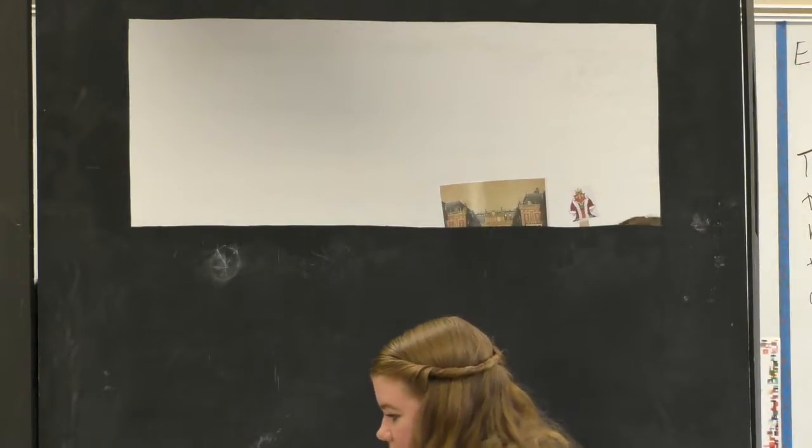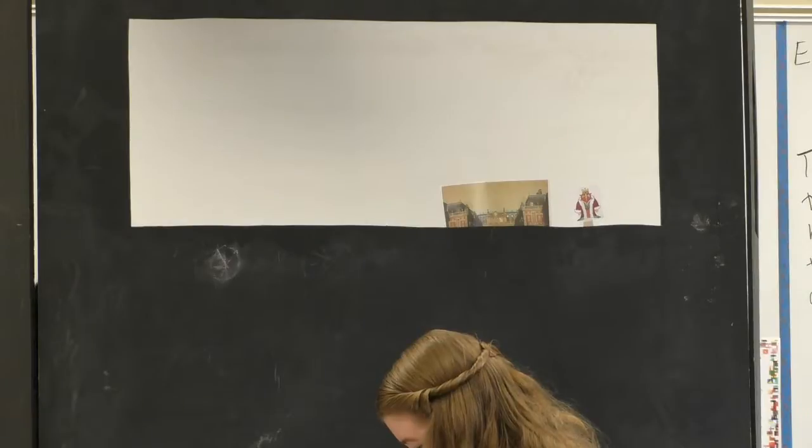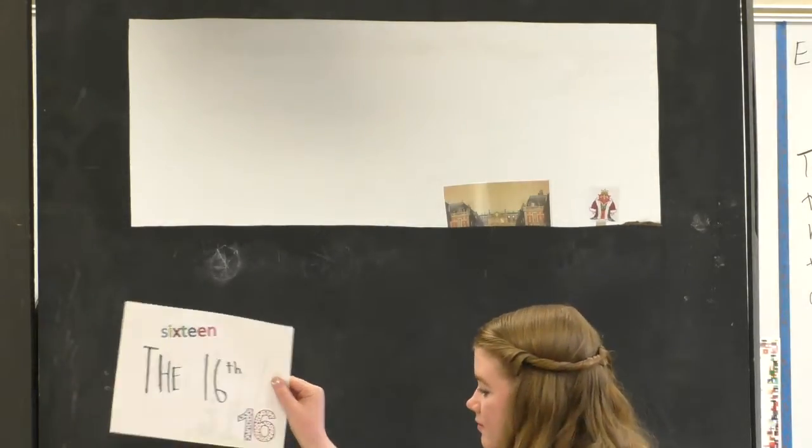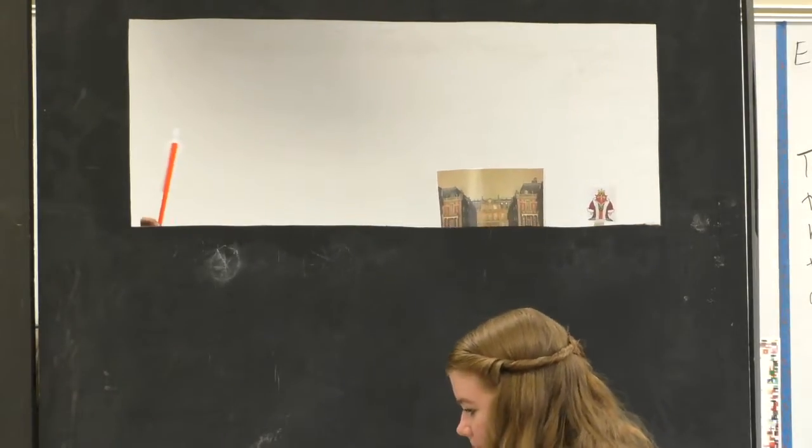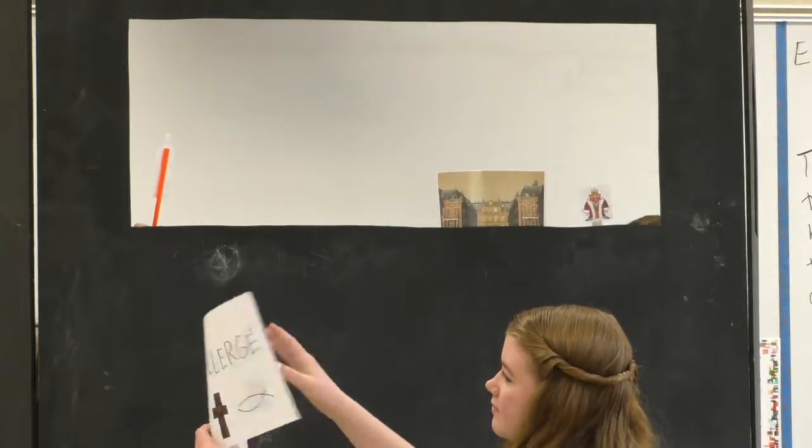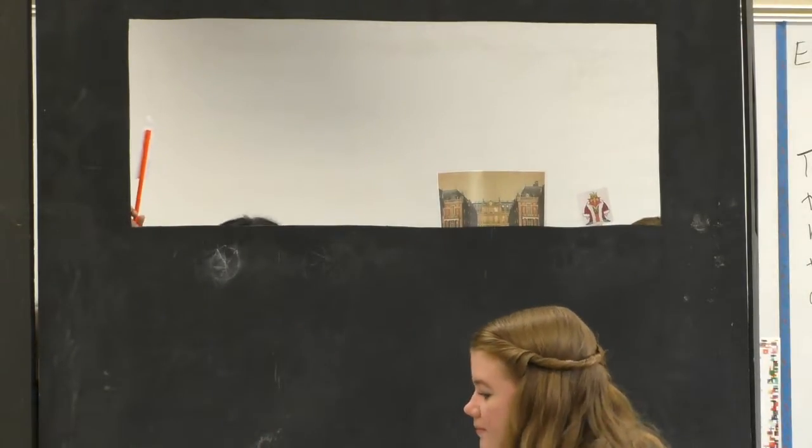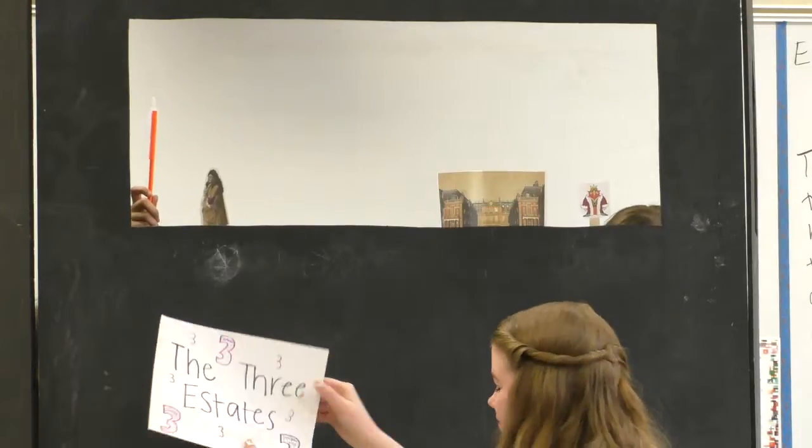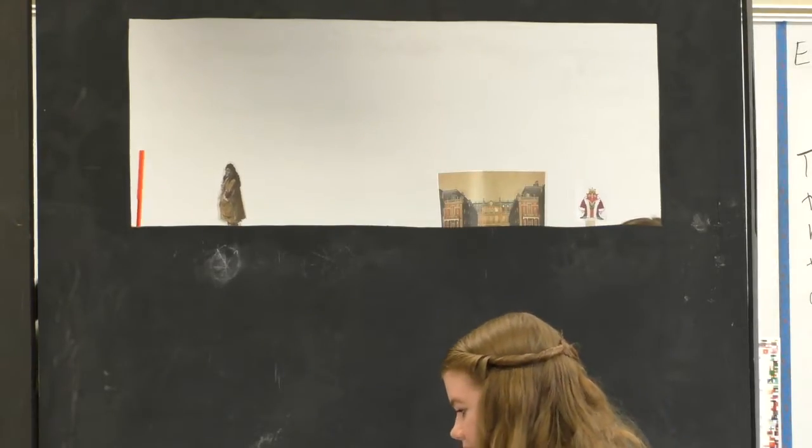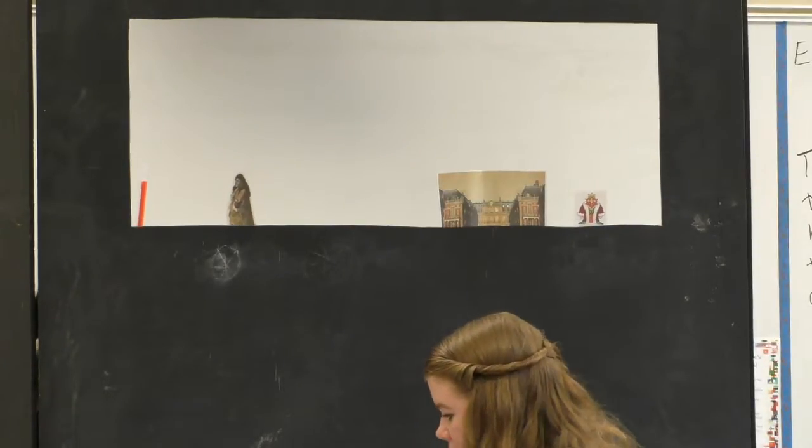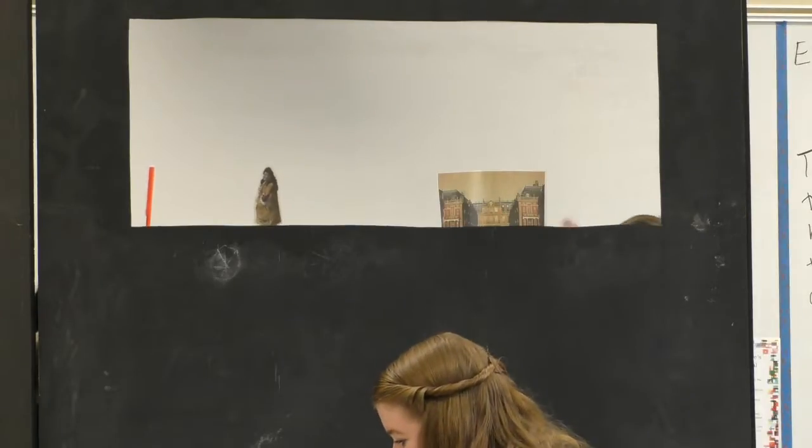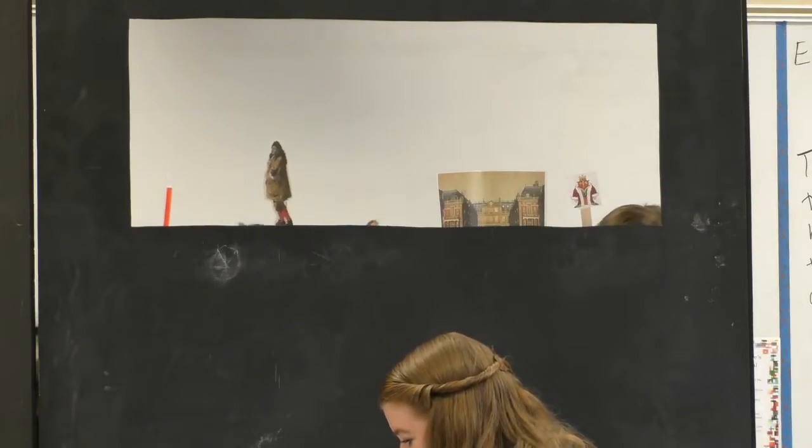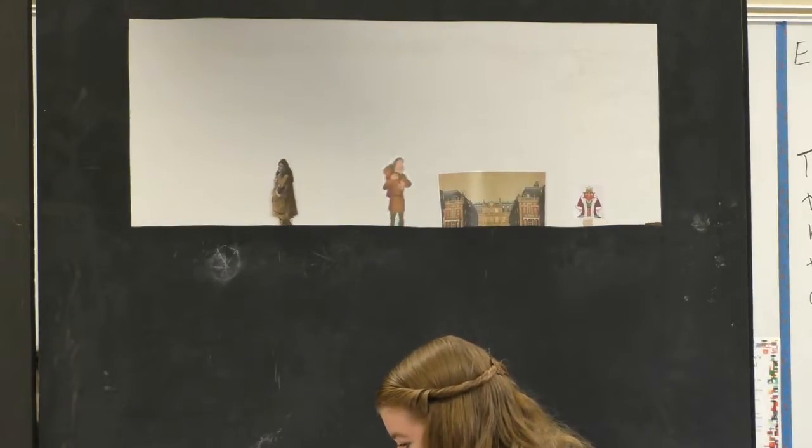Scene 3, maybe you can use the Estates-General and the National Assembly. Bonjour, c'est Louis XVI. Welcome to the Estates-General meeting. We are Le Clergy, the first estate, the highest class in La France. We are the Nobility, and we are the second estate. Okay, and we, the peasants, the bourgeoisie, and everybody else make up the third estate.